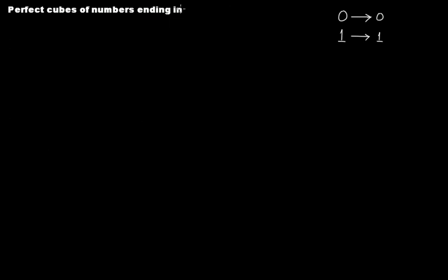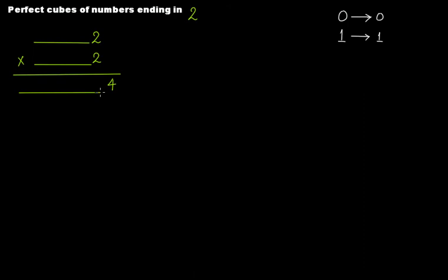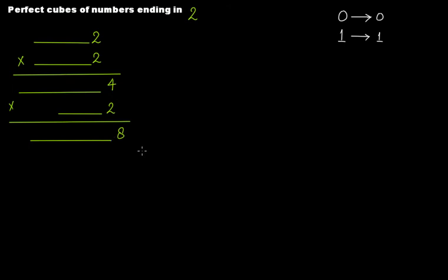If your number ends in 2, you multiply: 2 times 2 is 4 at the units place. Then multiplying again by 2 gives 4 times 2, which is 8 at the units place. So if a number ends in 2, its perfect cube will end in 8.